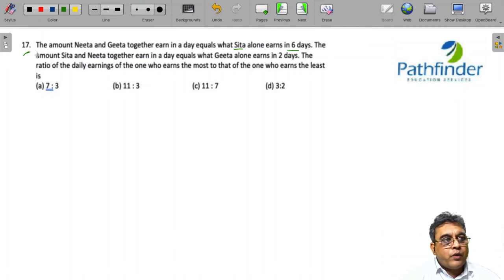Cat 21, Slot 1, Quantitative Aptitude, question number 17. The amount Neeta and Geeta together earn in a day equals what Sita earns in 6 days alone. I can write this as Neeta plus Geeta's earning in one day, where N is Neeta's earning in one day.